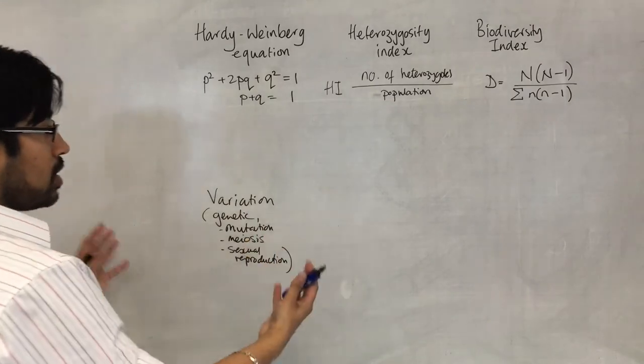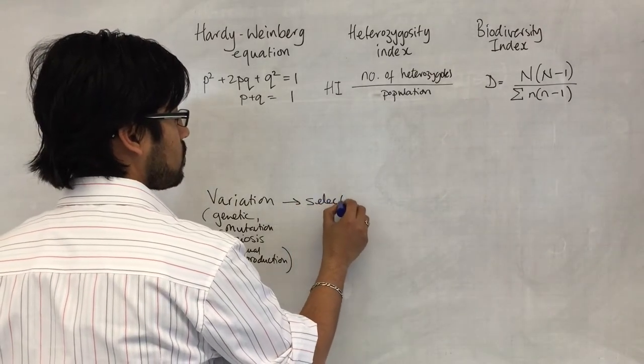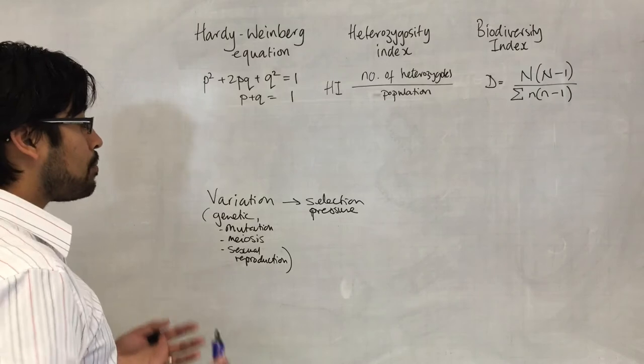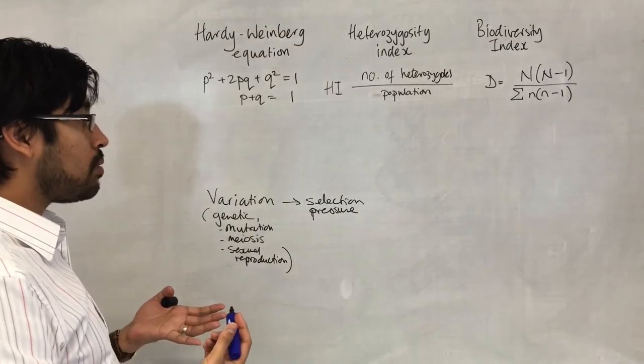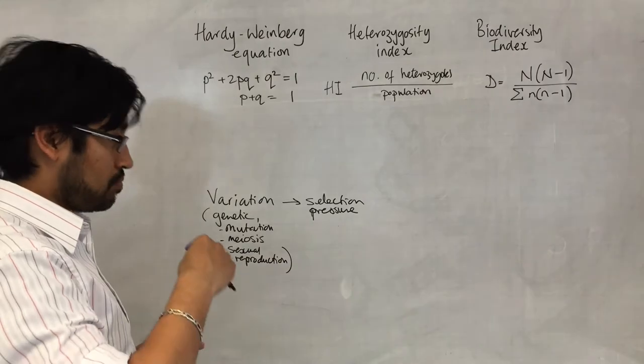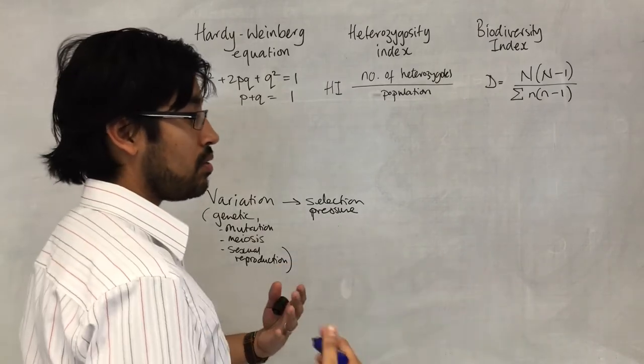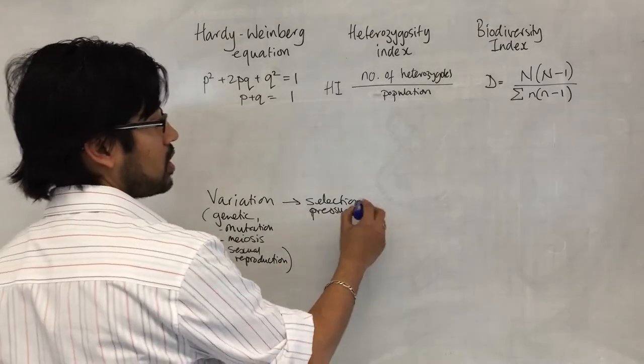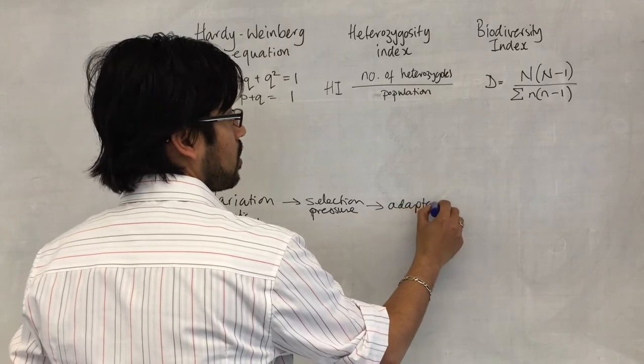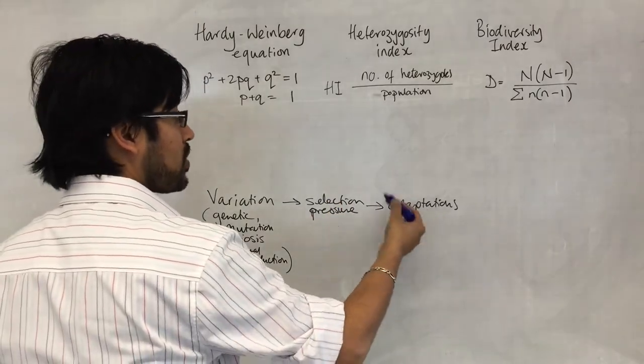We have variation in a population, and if we have a selection pressure, it's going to cause some of these variations... Some of these variations allow individuals to survive longer, to get to the age of reproduction, so that they can reproduce and pass on the alleles to the next generation. Selection pressure essentially causes some of these variations to turn into adaptations, because they help the organism to survive the selection pressure.